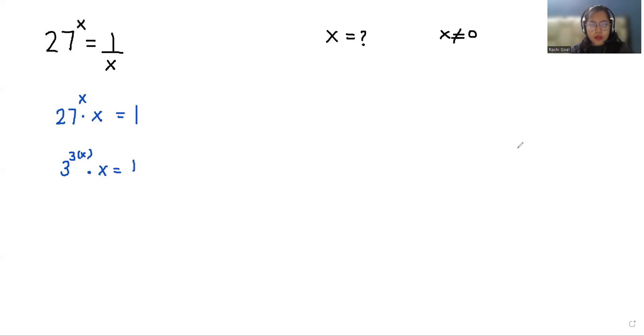According to the exponent rule, (x^m)^n = x^(mn). So, 3^(3x) times x equals 1.